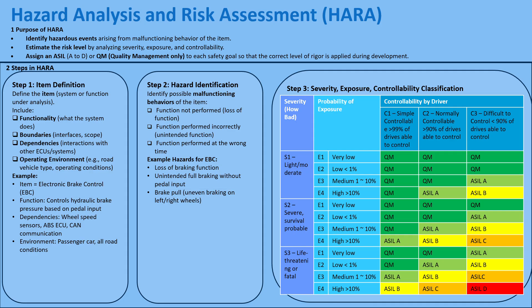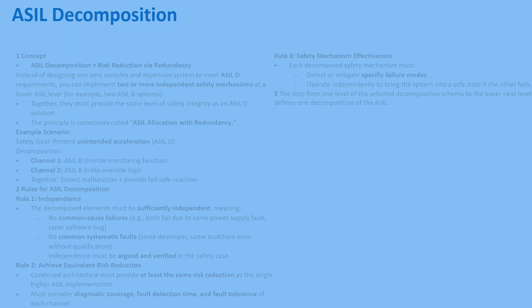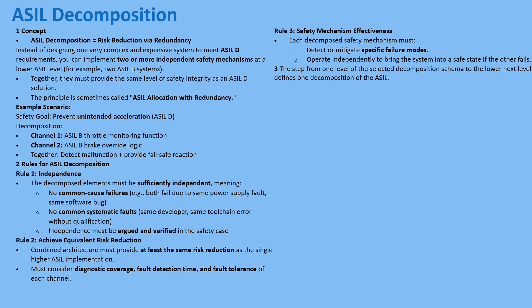Once you've got an ASIL D requirement, the engineering challenge really kicks in: how do you hit that incredibly high safety target without bankrupting the project? Part 9 offers an elegant solution called ASIL decomposition — risk reduction through redundancy, and often a massive cost saver. Instead of building one single, super complex, incredibly verified ASIL D component — astronomically expensive to develop and test — you can split or decompose that ASIL D safety requirement across two or more independent elements, each designed to a lower ASIL. If the main system fails, a separate secondary system catches it, and together they achieve the needed reliability.